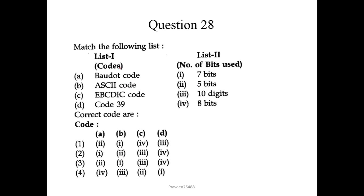Now question number 28. Match the following list. So in list 1, codes are given and in list 2, their corresponding number of bits are there. So Baudot code requires 5 bits, ASCII code requires 7 bits and EBCDIC, this is Extended Binary Coded Decimal Interchange Code. It uses 8 bits and code 39. Generally you can see this in barcode and it has 10 digits. So it is 2143. First one is the correct answer.